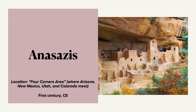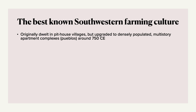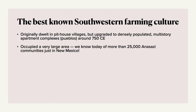Another culture is the Anasazi, and they're so cool because they were cliff dwellers. You can see pictures of their civilization that still remain. They were located in the Four Corners area where Arizona, New Mexico, Utah, and Colorado meet, and this dates back to the first century. This is probably the best-known southwestern farming culture. They originally dwelt in pit-house villages, but upgraded to densely populated multi-story apartment complexes — what are known as pueblos — around 750 CE. We know of more than 25,000 Anasazi communities in New Mexico alone.